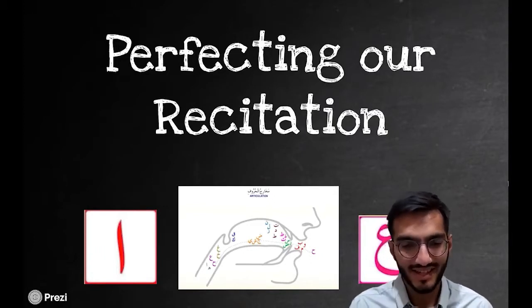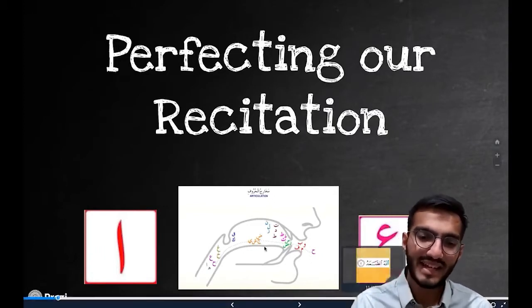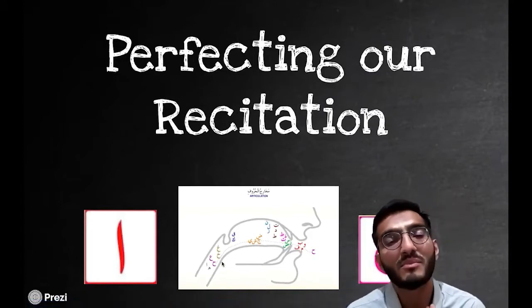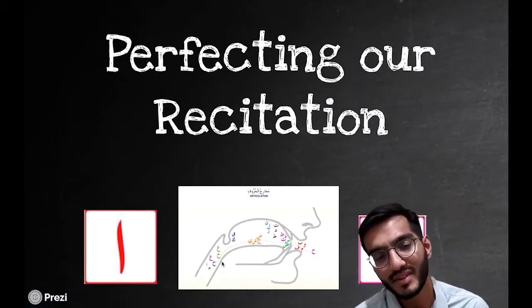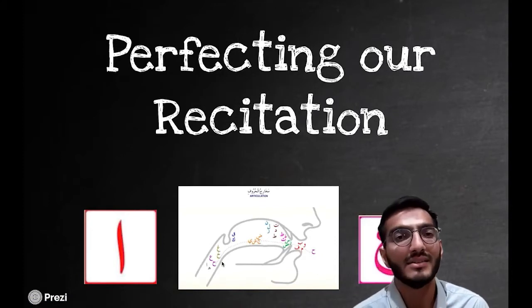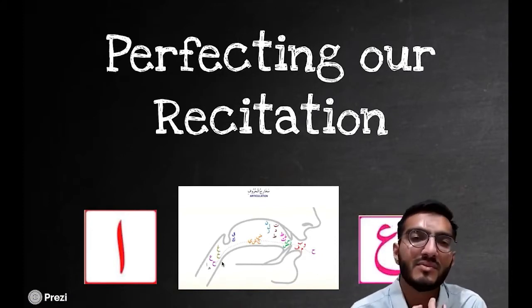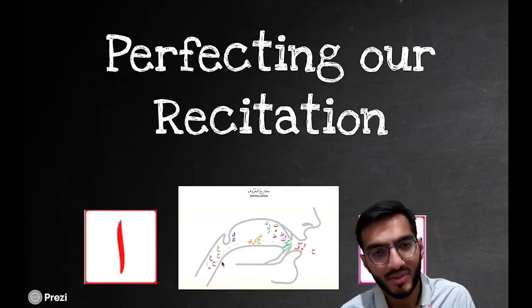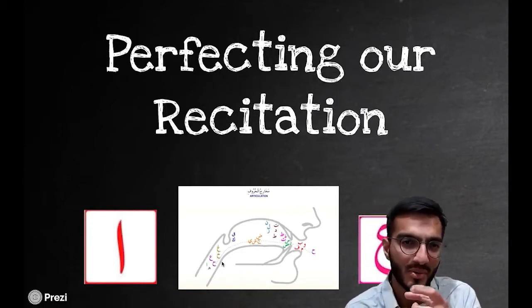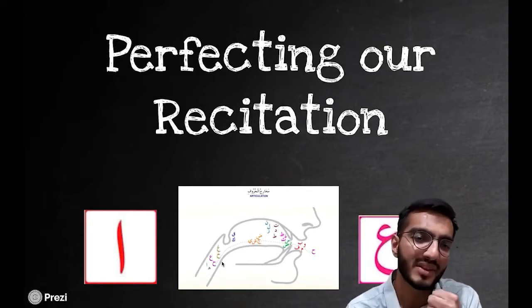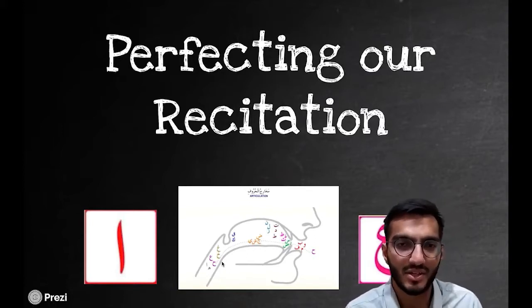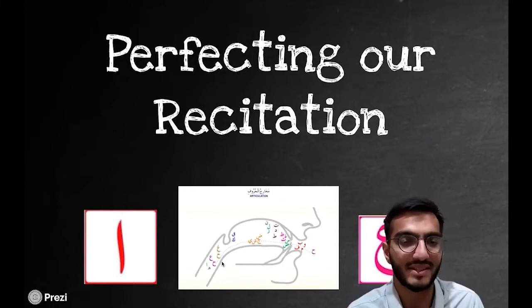Alif and Ayn are both throat letters. Alif comes from the bottom part of the throat — 'A' — whereas Ayn comes from the middle part of the throat, which is similar to Ha. You remember when we said we captured the air with Ha in the middle part of the throat? Ayn is similar, but you're putting a bit more emphasis in it.